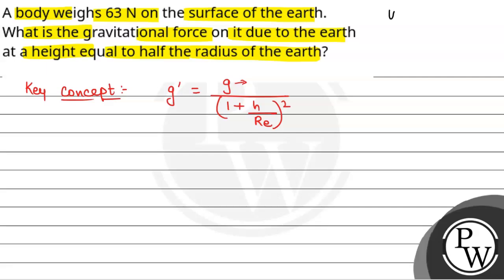We have been given the weight of the body on the surface of earth, that is mg = 63 Newton. So we have the mass of the body as 63 divided by g.